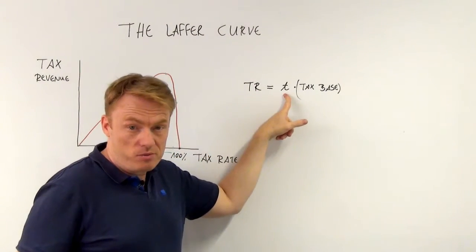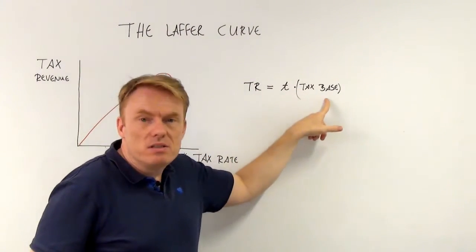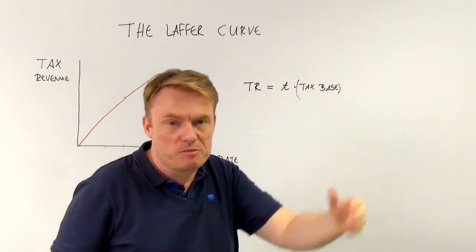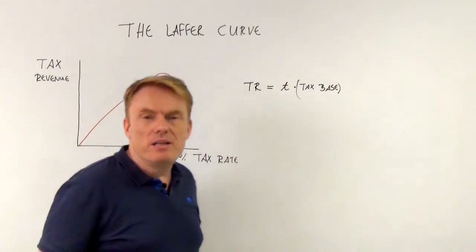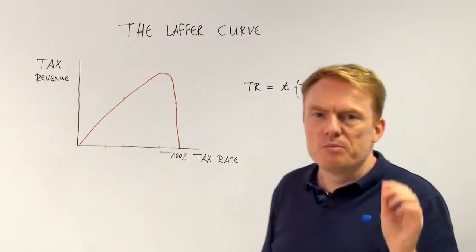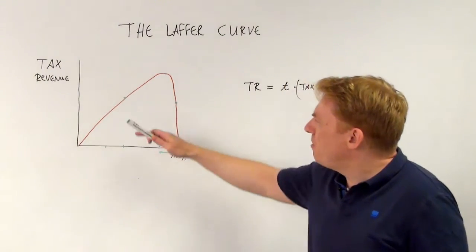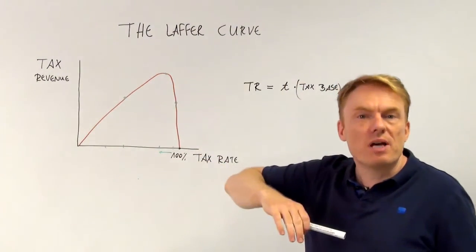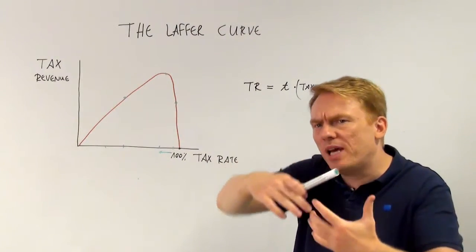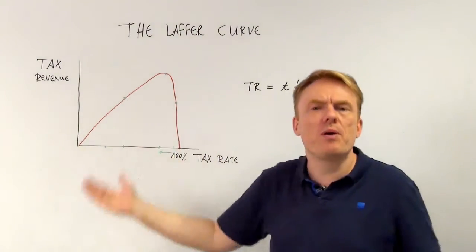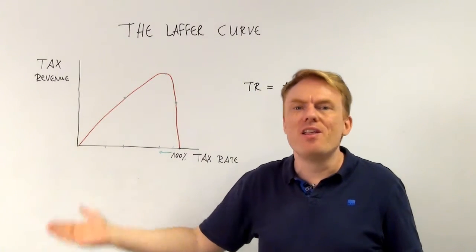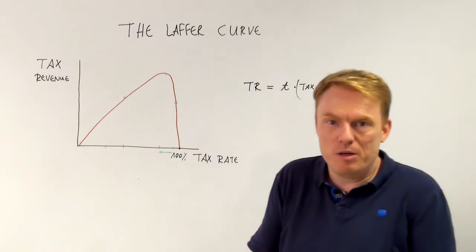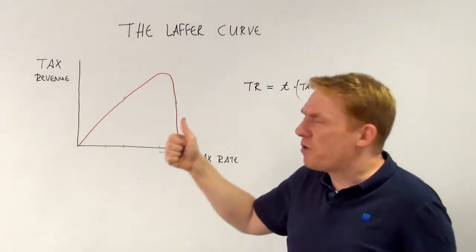A decrease in tax rate, not influencing in any way tax base, would lead to a smaller tax revenue, thereby decreasing the amount of money government would get. So if we are on the wrong side of the Laffer curve, that's a big problem. First problem.